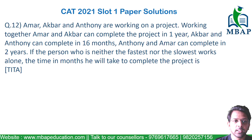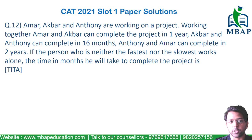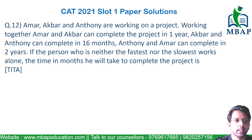The question says: if the person who is neither the fastest nor the slowest worker has to work alone, then how many months will he take to complete the project? Now, let's assume Ammar is X, Akbar is Y, and Anthony is Z.